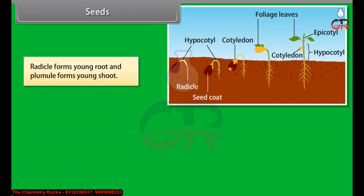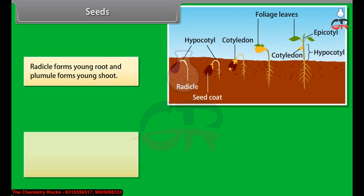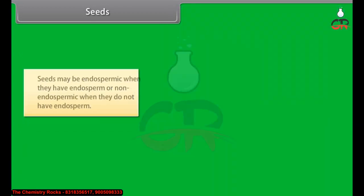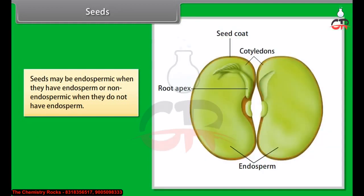The radicle forms the young root and plumule forms the young shoot. Seeds are monocotyledonous when they have one cotyledon, or dicotyledonous when they have two cotyledons. Seeds may be endospermic when they have endosperm, or non-endospermic when they do not have endosperm.